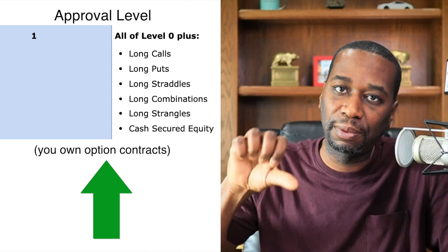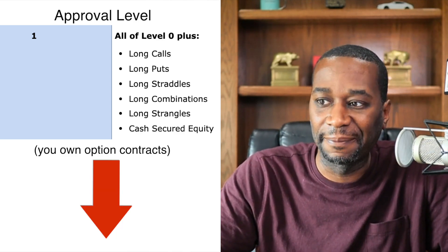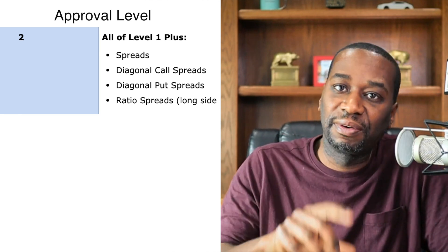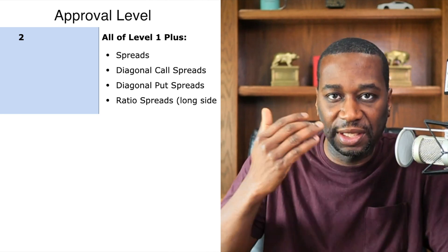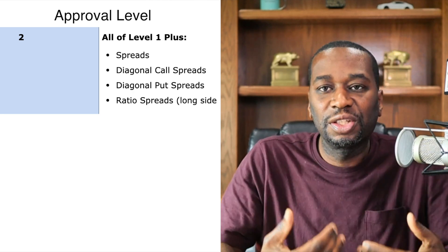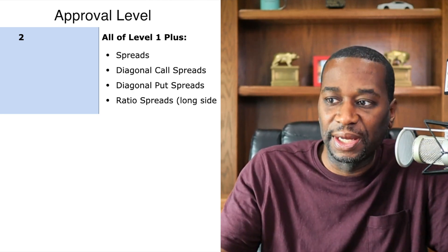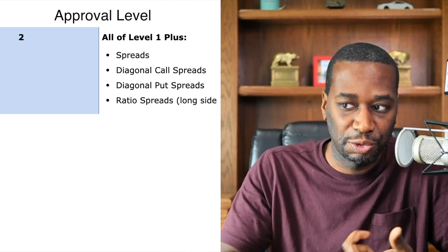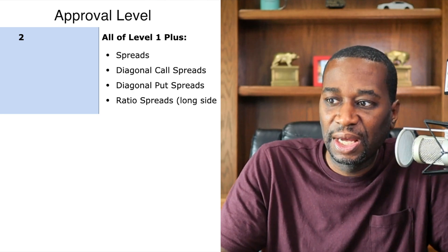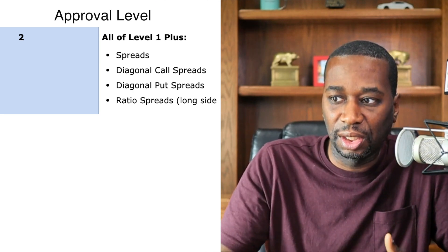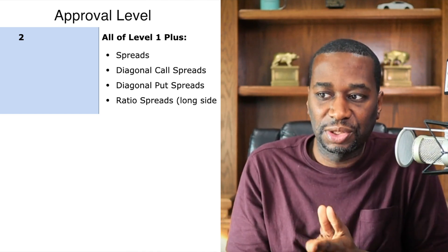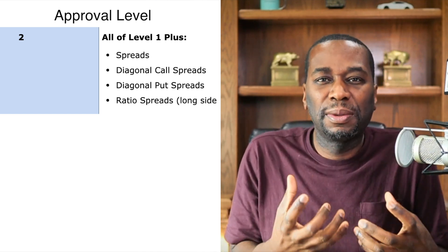Now when you go to level two, which is going to include everything from level zero and level one, obviously as you keep going up the food chain here, as you go to level two, you're going to start to be able to do things like spreads. Okay, so it says right here you're going to do spreads, diagonal call spreads, diagonal put spreads, and ratio spreads long side heavy. What this simply means is that you'll be able to start to do spreads.